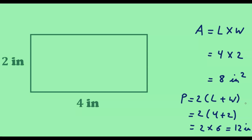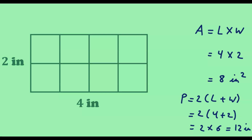Now let us see why the area formula works. The length of the rectangle is 4 inches, so let us divide it into 4 strips, each of width 1 inch. Since the width is 2 inches, we divide each strip into 2 parts of 1 inch each, giving us a grid of unit squares where every side is 1 inch.